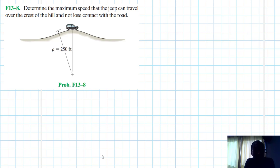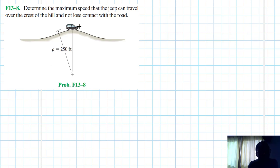Welcome to this screencast. The problem reads: determine the maximum speed that the jeep can travel over the crest of the hill and not lose contact with the road. This problem is from Engineering Mechanics Dynamics, 14th edition by RC Hibbeler. Let's draw the free body diagram.